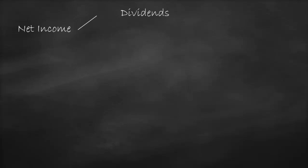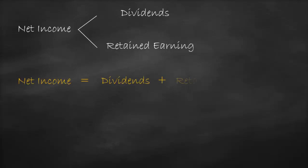When a company generates profit, which we call net income, the company has two choices. Firstly, it can distribute a part of this profit to shareholders, which we call cash dividends. Or secondly, we can keep part of this profit within the firm, which we call retained earnings. So we know net income equals dividends plus retained earnings.